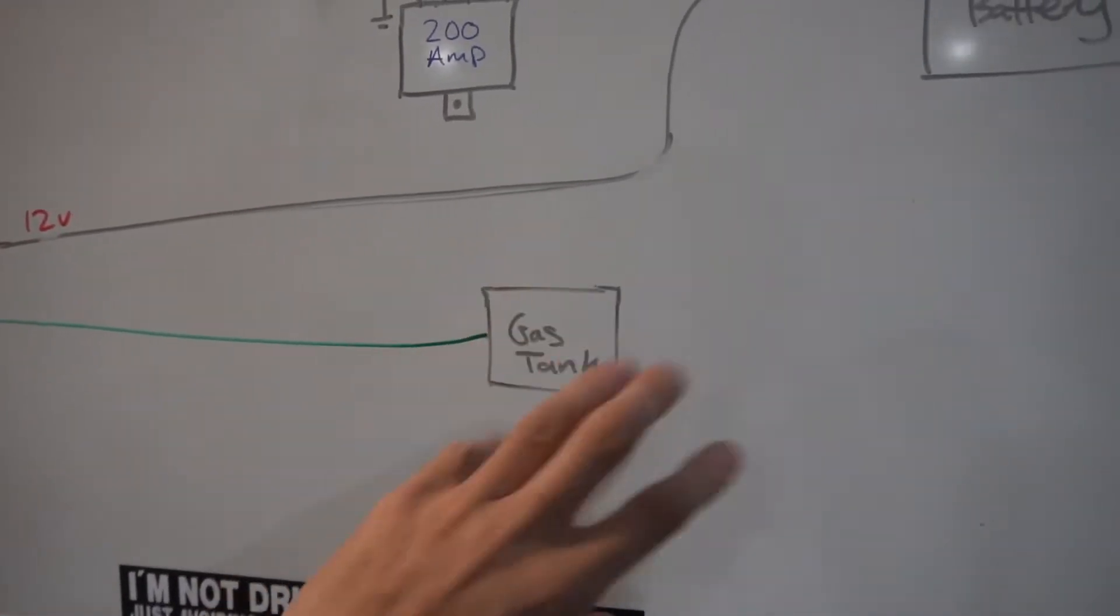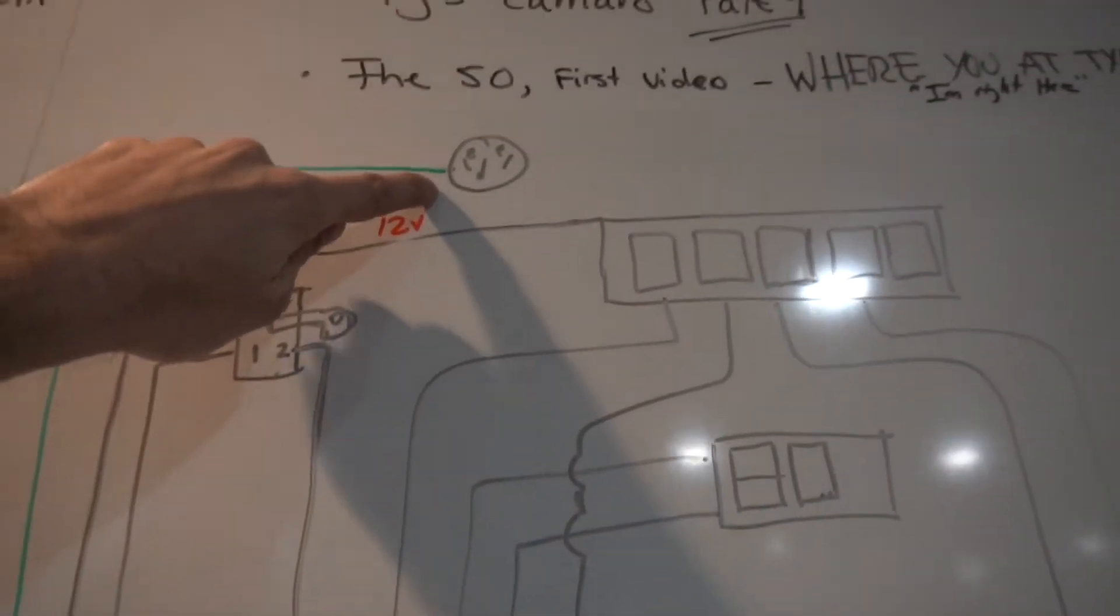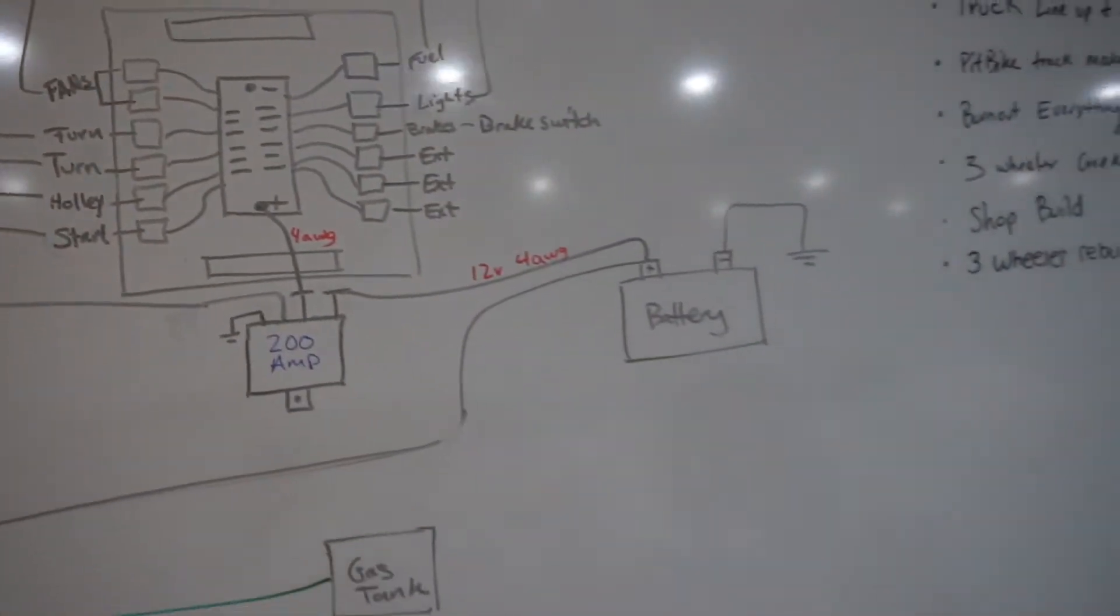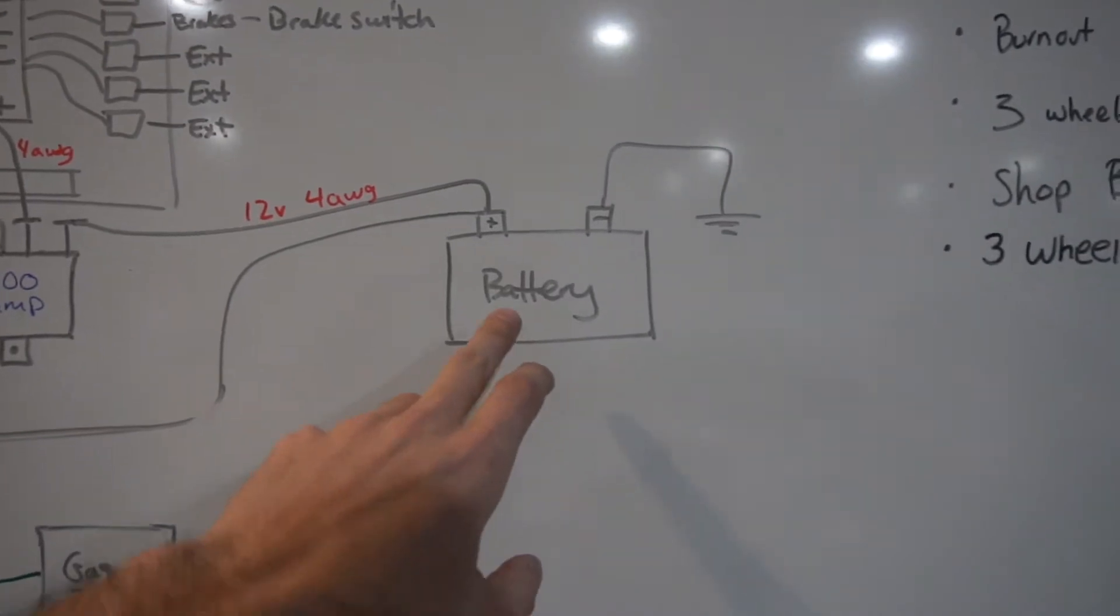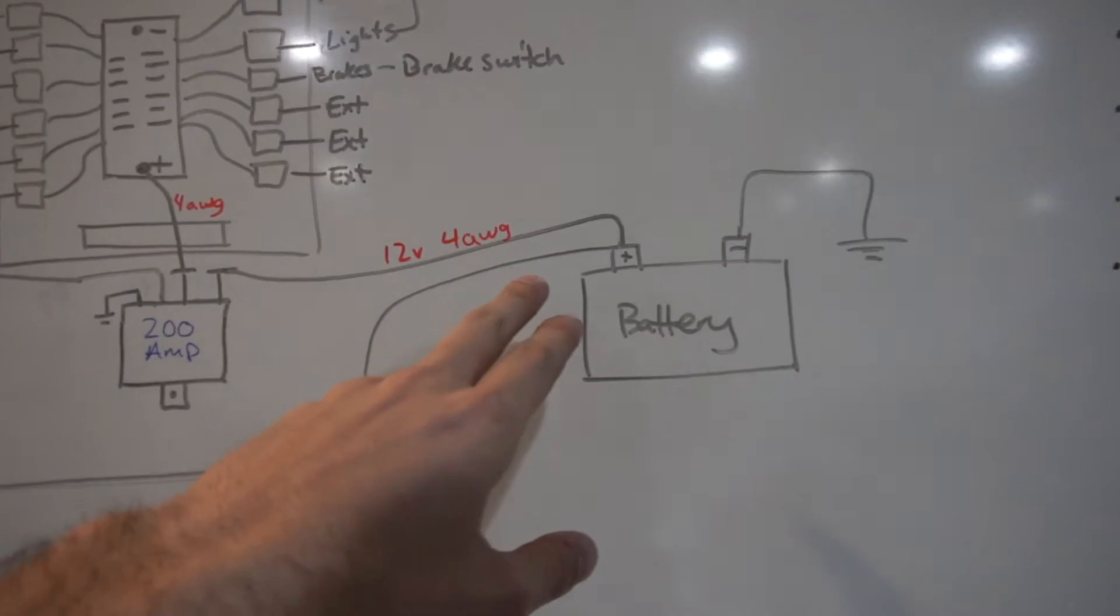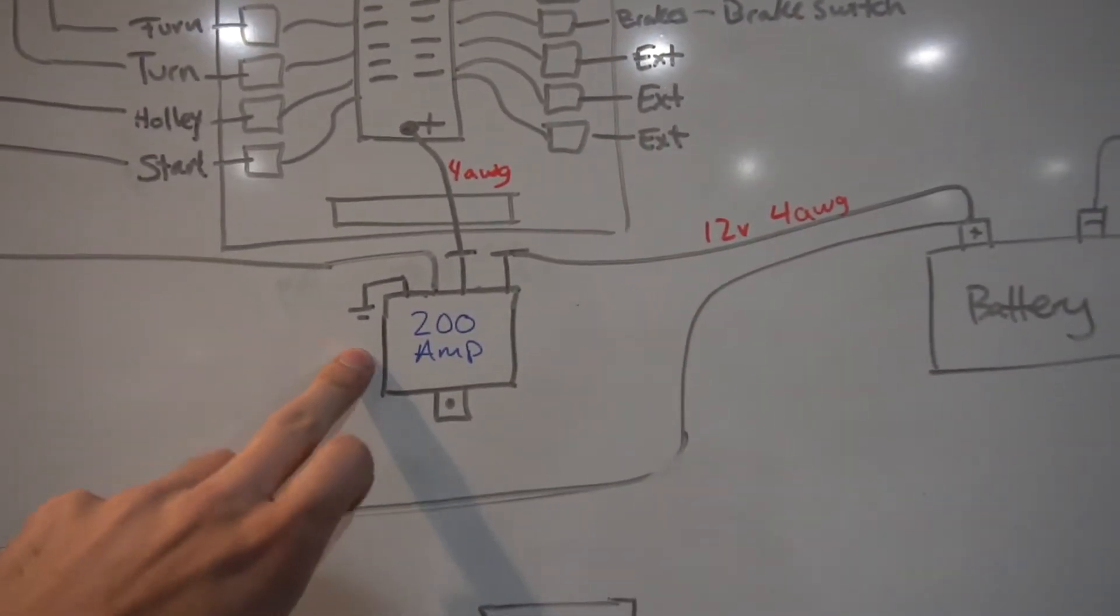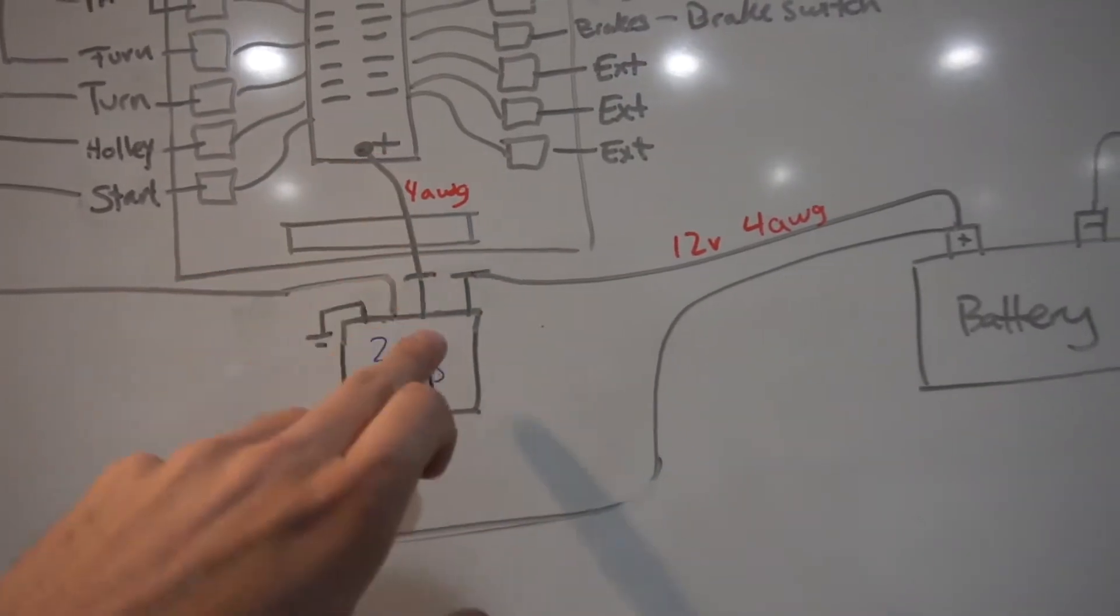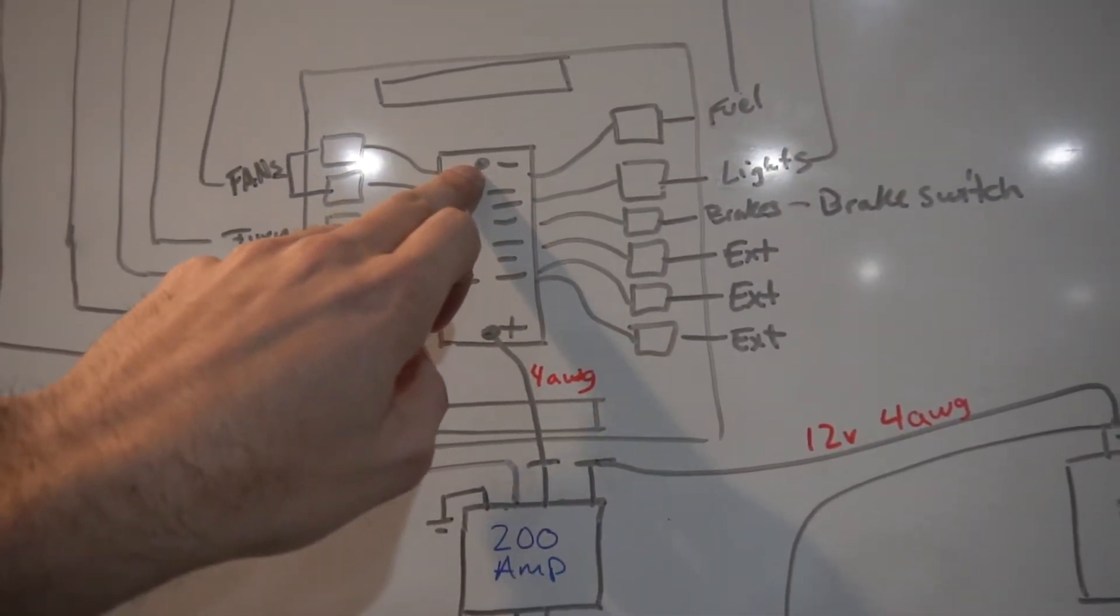We'll start with the battery here. Obviously the battery is grounded. Running from the battery, this will be at least four gauge wire, maybe a little bit larger, and that'll run into the large post on this relay. Then the other large post will run over to the positive on the panel here, and then on the other side of the panel you will run to negative.